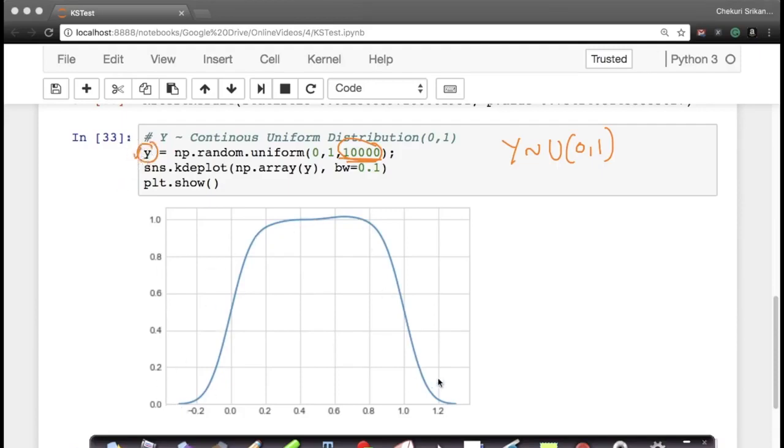Now, if you see the kernel density estimation plot for this, of course, most of the values lie between 0 and 1. So you look at this, it's like a uniform distribution. This is far from Gaussian distribution. Now, because of kernel density estimation, I get some values even below this. But otherwise, most of my value should lie between 0 and 1. This is mostly an estimation problem.